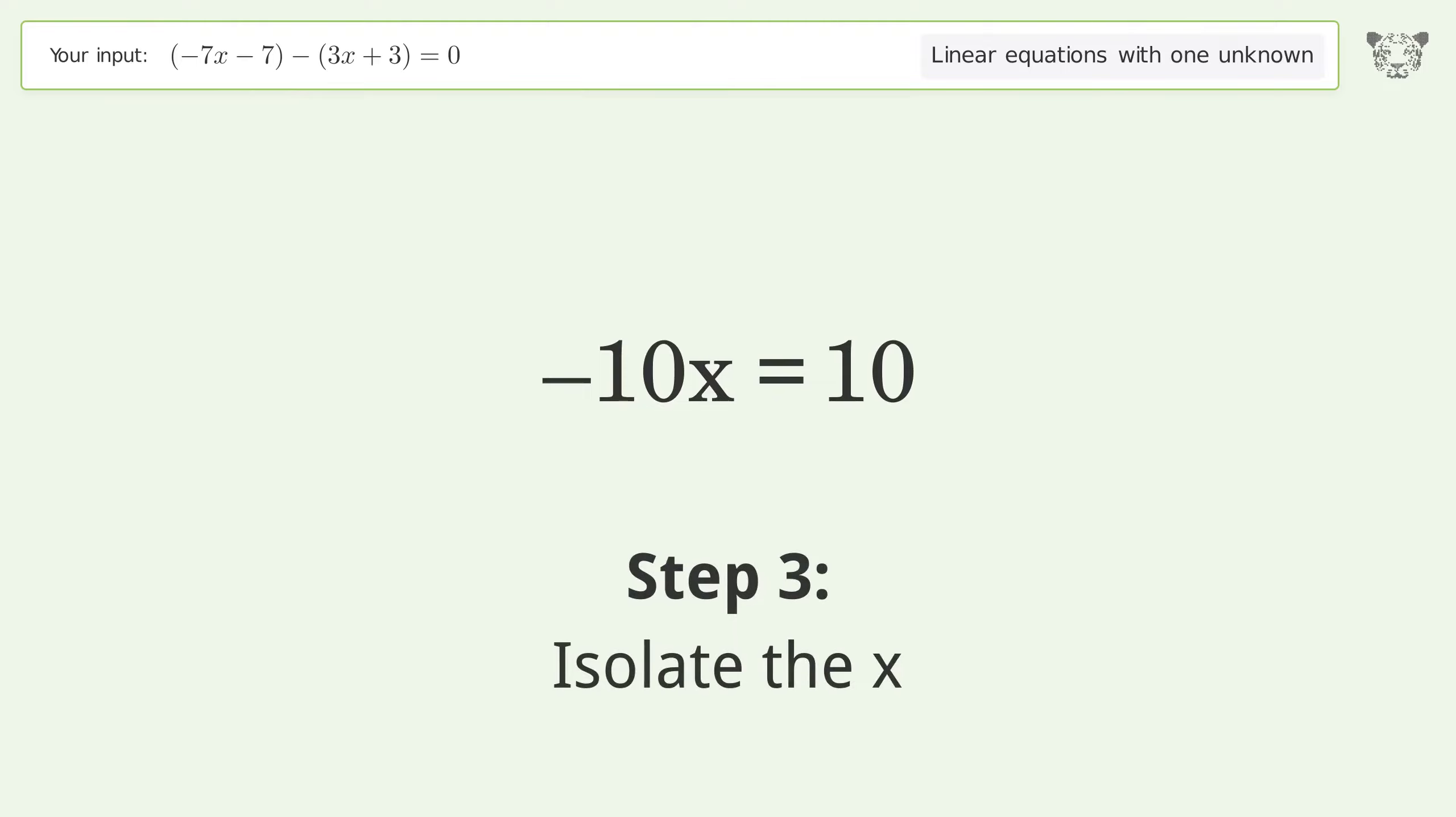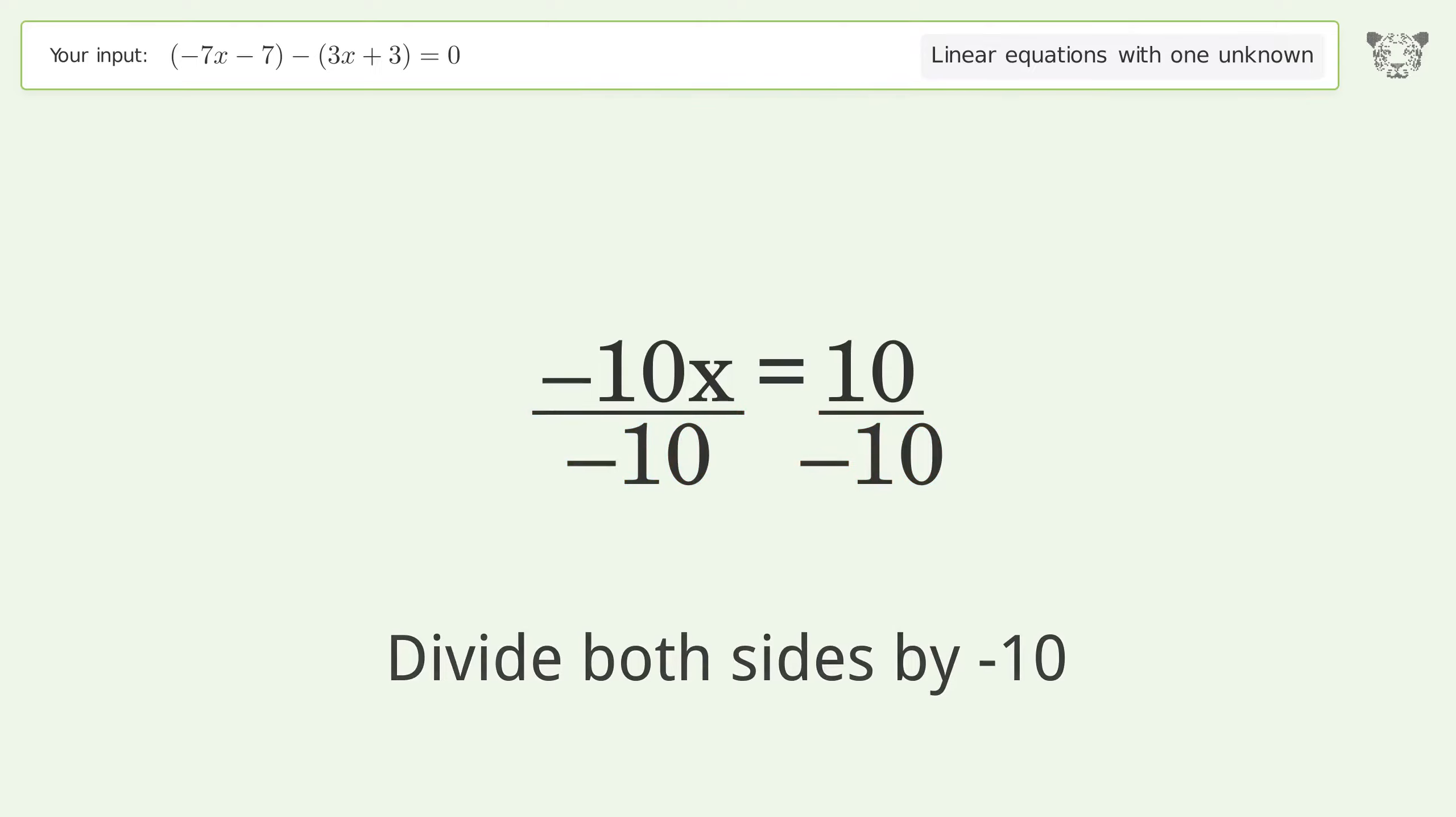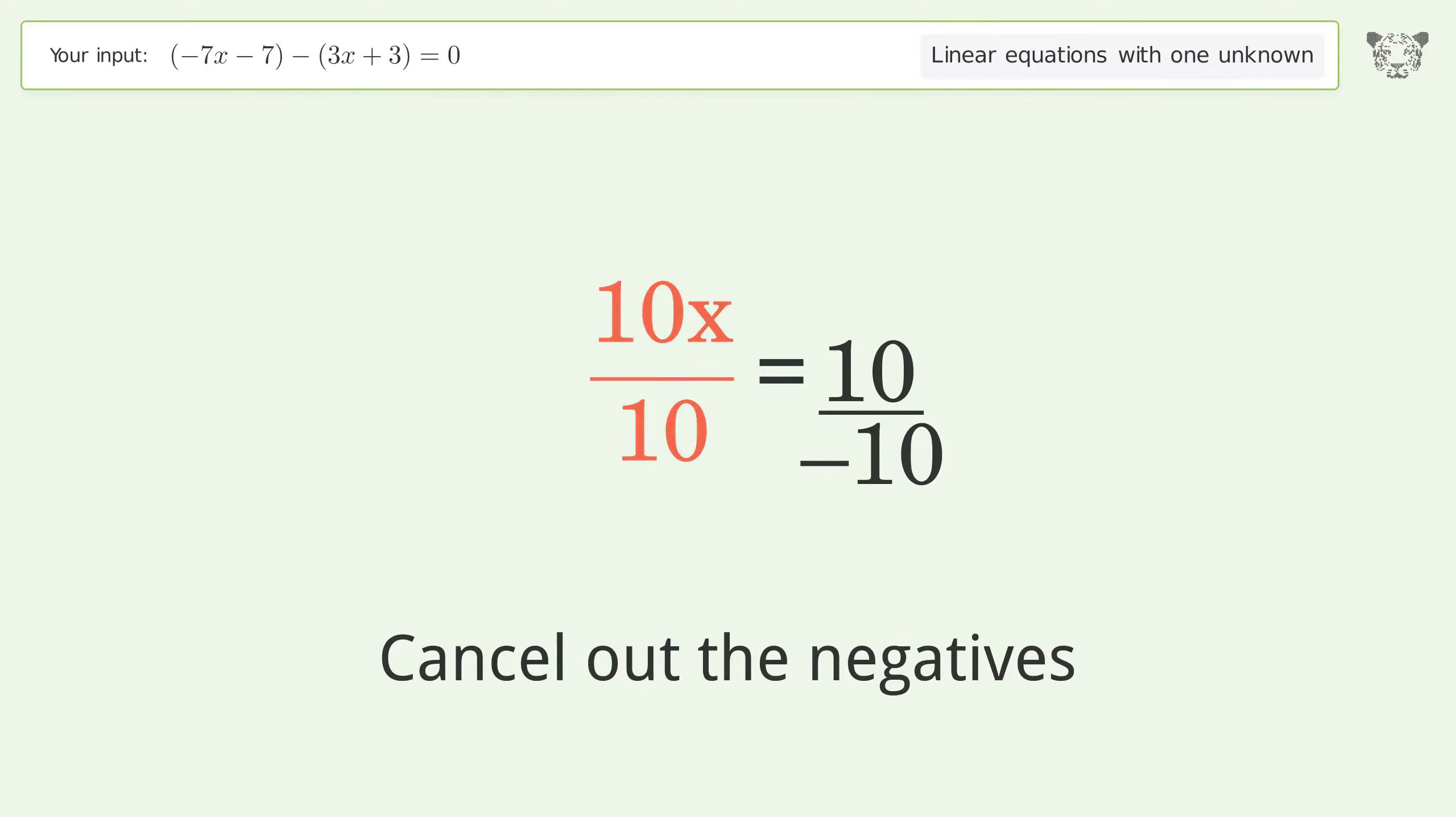Isolate the x. Divide both sides by negative 10. Cancel out the negatives. Simplify the fraction.